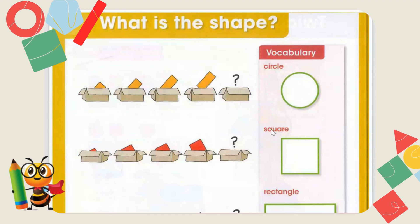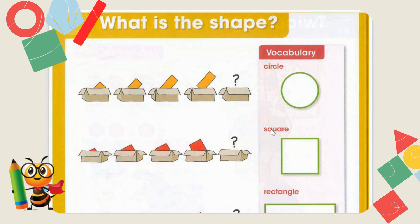Hi guys, welcome back to my channel. Study Bee here with another maths lesson. This chapter is known as shapes. Do you know what a shape is? Don't worry if you don't — we are going to learn. A shape is an outline of something. The outline can be of your water bottle, your pencil, your television, your mobile phone, your book. If I say, what is the outline of your coin? Just take a coin and look at it — what is the shape of your coin?